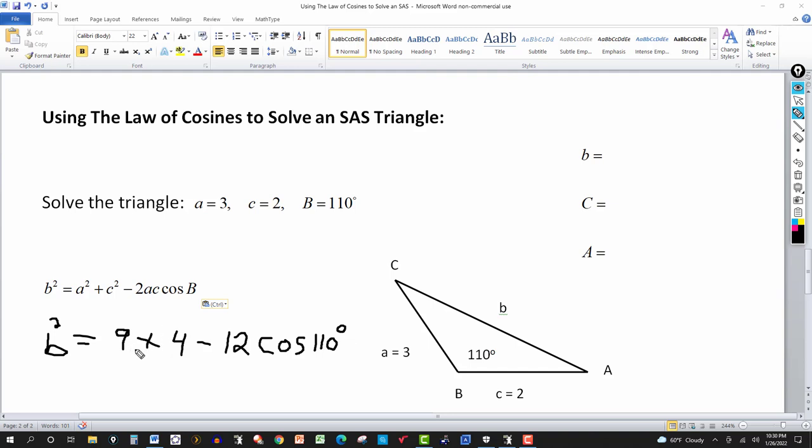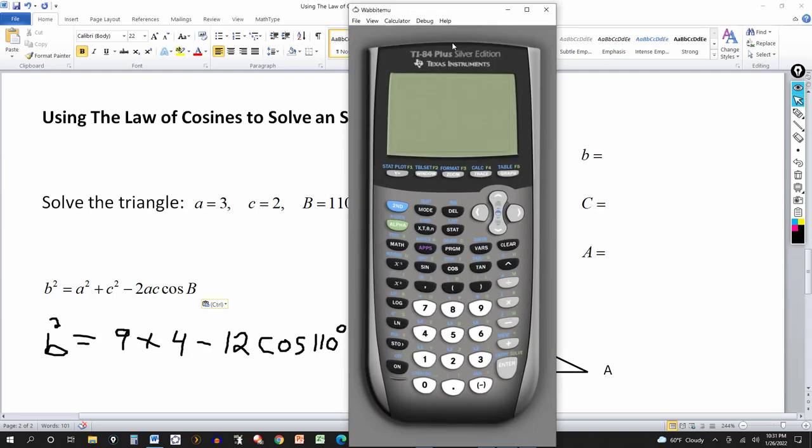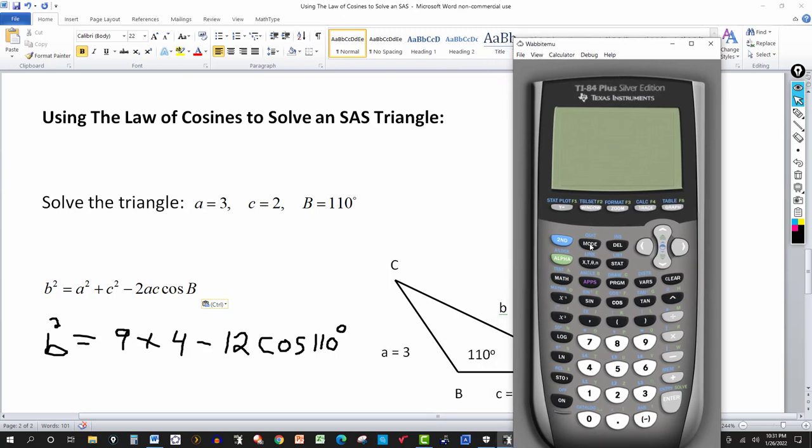And then we compute this. 9 plus 4 minus 12 times the cosine of 110. We can do it all in the calculator here, so we don't round off until we get the final answer. Always double check your calculator, make sure we're dealing with degrees here, so this is degree mode. So we want 9 plus 4, that's 13, minus 12, and there's the cosine of 110. And we hit enter.